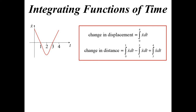The change in distance requires us to break the integral up into above the axis and below the axis. Displacement is just a straight-out integral, whereas distance we have to consider area — we don't care about the plus or minus. So if they want change in displacement, we can do a straight integral; if they want change in distance, we have to break it up into above and below.